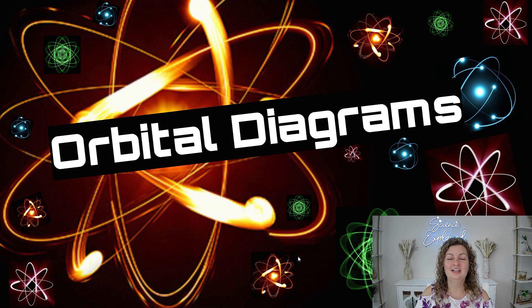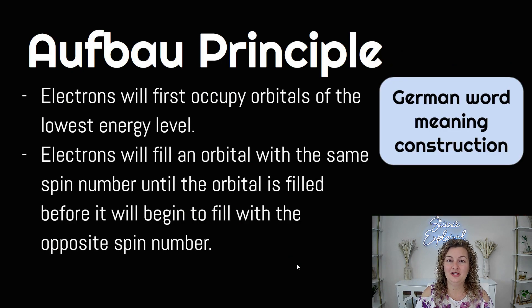Hey everybody, Mrs. Bodishan here. Today we're talking about orbital diagrams. We're going to talk about several different things. The first one is Aufbau Principle. It says that electrons will first occupy orbitals of the lowest energy level. Electrons will fill an orbital with the same spin number until the orbital is filled before it will begin to fill with the opposite spin number.